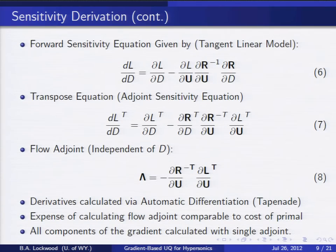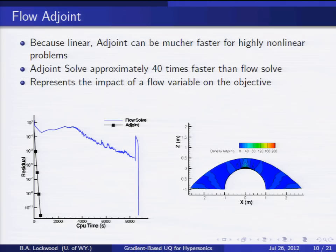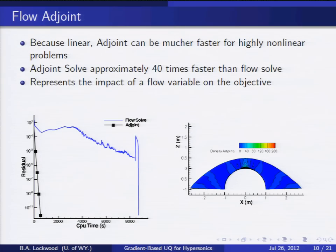We can transpose the entire process: now we invert the transpose of the Jacobian onto a vector that depends only on our objective and not our design variables. So with a single adjoint solve, we can calculate all components of the gradient in a constant amount of work. The derivatives needed throughout are calculated through automatic differentiation — I specifically use a tool known as TAPENADE. A nice thing about adjoints for hypersonics is that the adjoint equation is linear while the flow is highly non-linear, so adjoint solves are about 40 times faster than the flow solves. We're getting all this gradient information essentially for free.